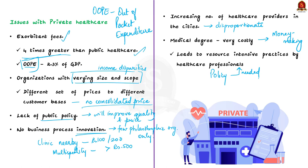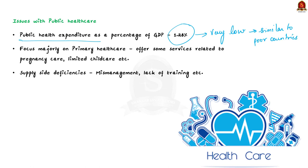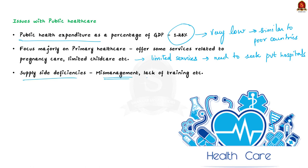Now, what about the public sector — is it free of problems? Definitely not. The first issue is that public health expenditure in India is just 1.8% of GDP, which is similar to that of the poorest countries. Another issue is limited services — the government mainly offers some services related to pregnancy care, limited child care, and some services related to national health programs. These represent only 15% of all morbidities for which people seek care, meaning for the other 85% people must go to the private sector. There are also supply-side deficiencies like mismanagement, lack of training among professionals, and inadequate medical practitioners.